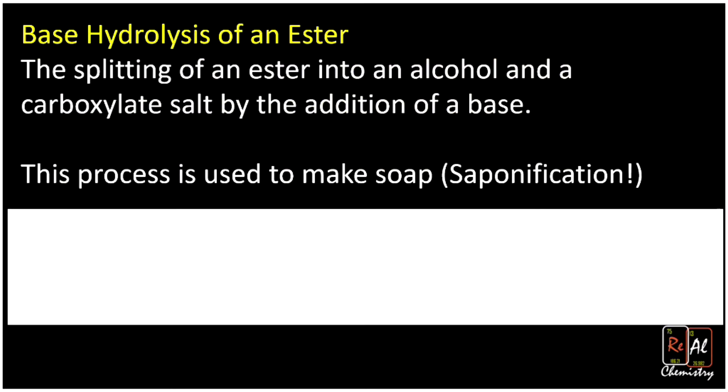The base hydrolysis of an ester is the splitting of an ester into an alcohol, that's one of the products, and a carboxylate salt, that's the other product, by the addition of a base. We already know what an alcohol looks like—it has the OH group on it—but this carboxylate salt can maybe sound a little confusing.